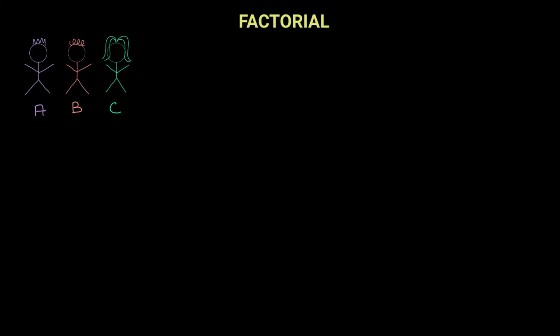Let's say we have three people A, B and C, and we are asked to arrange them in a straight line and find the total number of arrangements or different possibilities. We can start off with A standing at the beginning of the line. If A is standing at the beginning, it can be arranged with B in the second position or C in the second position. If A and B are standing at the first two positions, that only leaves us with C in the third position.